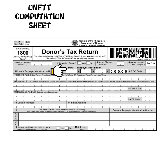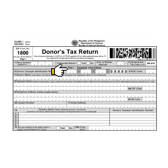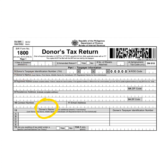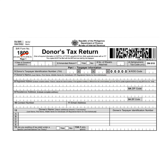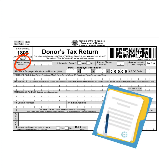Part 1: Taxpayer Information. This pertains to Item Numbers 1 to 13A. These are the details of the donors and the donees — namely, their registered names, registered address, and TIN. The field Date of Donation refers to the notary date of the deed of donation.